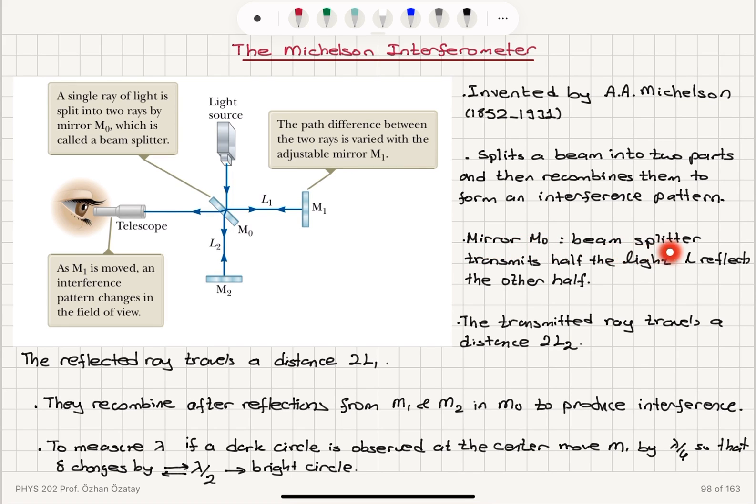Mirror M0 is our beam splitter which transmits half the light and reflects the other half. The transmitted ray travels a distance 2L2 towards M2 and back and the reflected ray travels a distance 2L1 towards M1 and back. They recombine after reflections from M1 and M2 in M0 to produce interference.